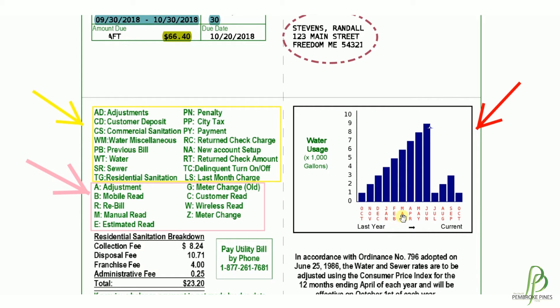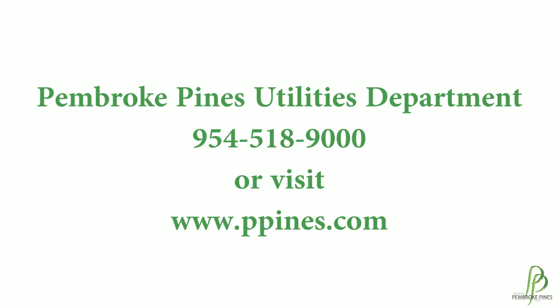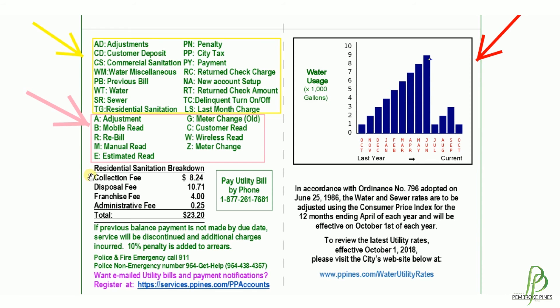If you believe the amount of consumption you're being billed for is not normal for your household, whether it's too high or too low, please reach out to the utility office for assistance. Another feature that we have added to your monthly utility bill is a breakdown of your residential sanitation charges. You may also want to review this area for any important updated information regarding your utilities.